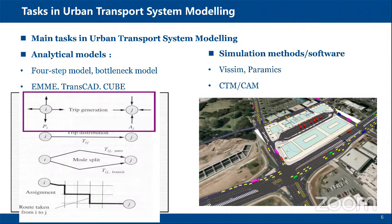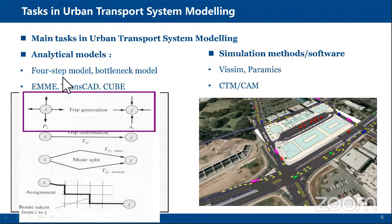Analytical models use economics models to analyze these research themes and give us closed-form solutions. The good side of the four-step model is that it can provide a very concise, closed-form solution. But the limitation is that it has many strong assumptions — for example, it assumes all users will choose the shortest path, which is not always true in practice. Because of these strong assumptions, the final solution can also be problematic and has certain limitations.